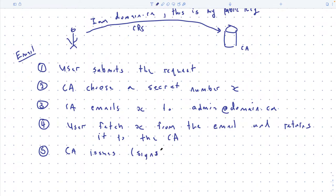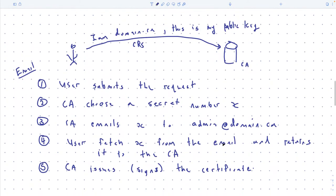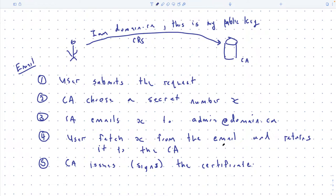Then the user can download the certificate or have it emailed to them. This process is fully automated from the CA's perspective — the CA just runs a server that automatically handles all of this, so there's no delay from the CA's side.